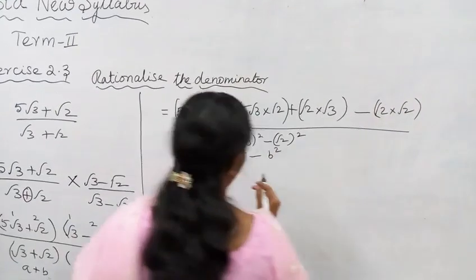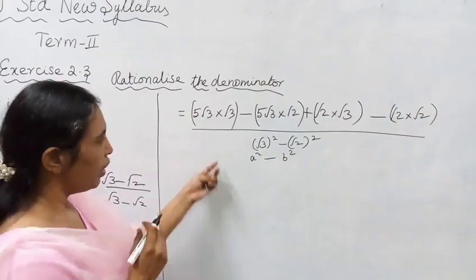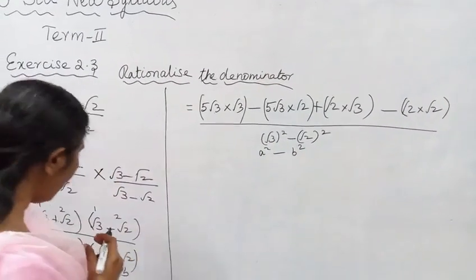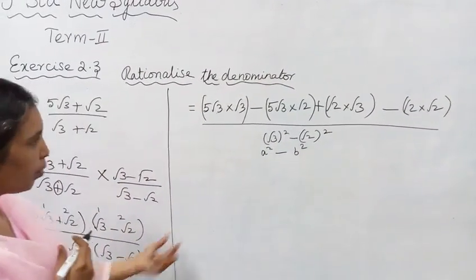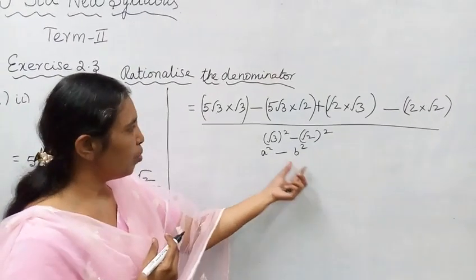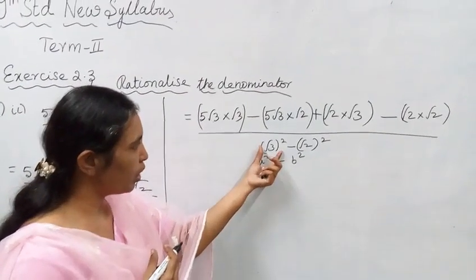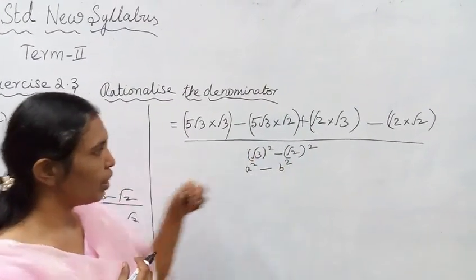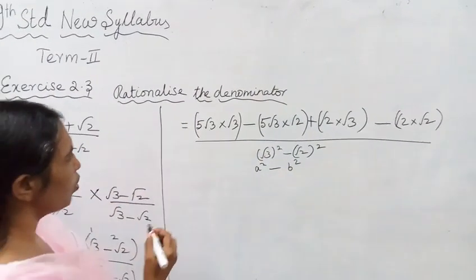Are you able to understand, students? a plus b times a minus b is what? a squared minus b squared. So the denominator becomes √3 whole squared minus √2 whole squared.